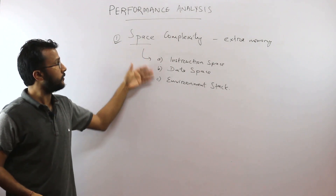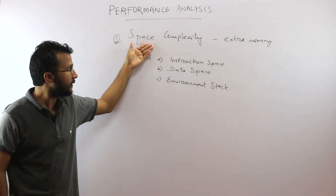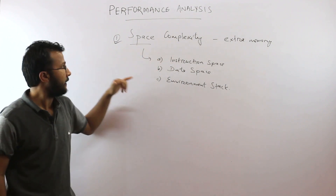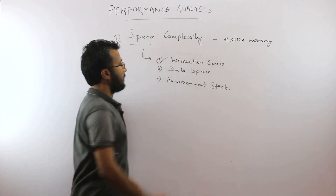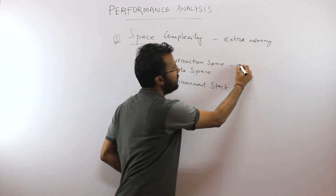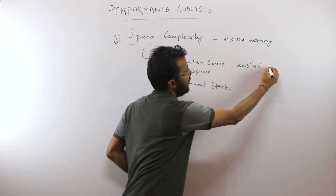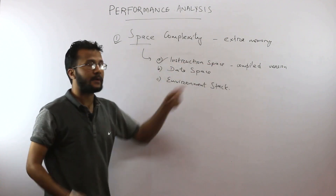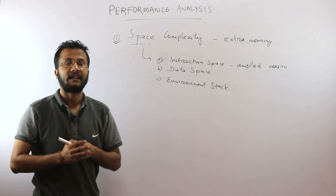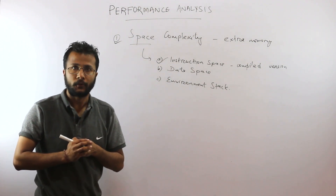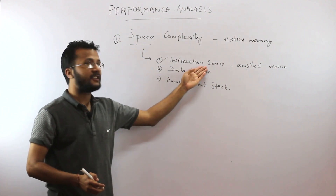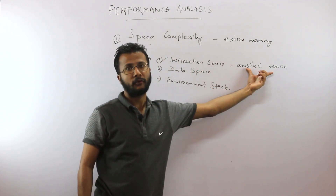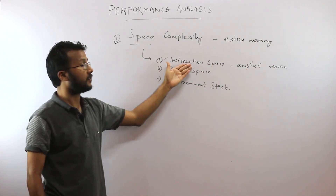The components that contribute to the space complexity of any given algorithm are: instruction space, data space, and environment stack. Instruction space is the amount of space required by the compiled version of the program. Instruction space depends on what kind of compiler you are using, because different compilers may yield different sizes of compiled code and have different optimization techniques.